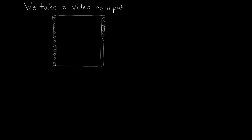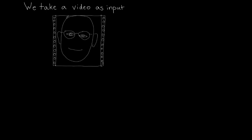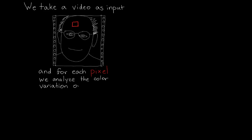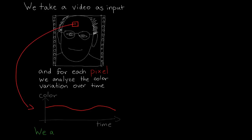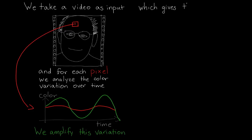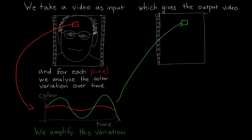These changes are hidden in ordinary videos we capture with our cameras and smartphones. Given an input video, for each pixel we analyze the color variation over time and amplify this variation, which gives us a magnified version of the video.